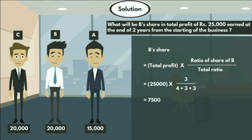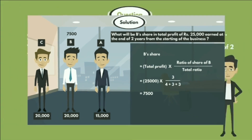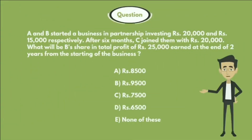The share of B is 7,500 rupees. So the answer is option C: 7,500 rupees.